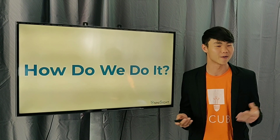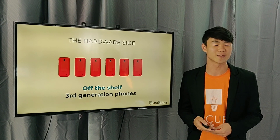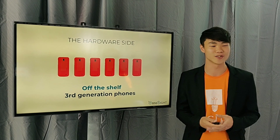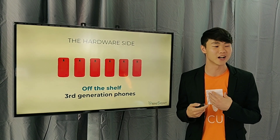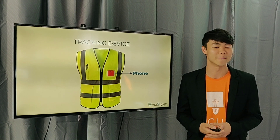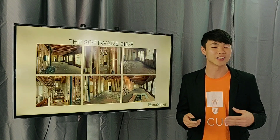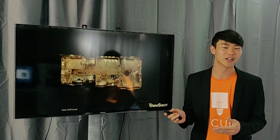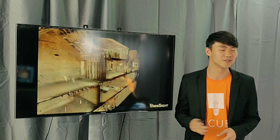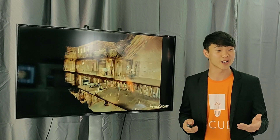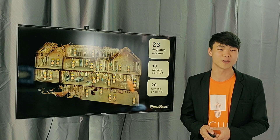How do we do it? We capture and track the job site using a hardware plus software solution. We put these phones — they are third generation — into the safety vest of every worker. As they go about the day, we combine all those images into a working 3D model of the workplace. This in itself is very valuable for a contractor, but we go beyond that.